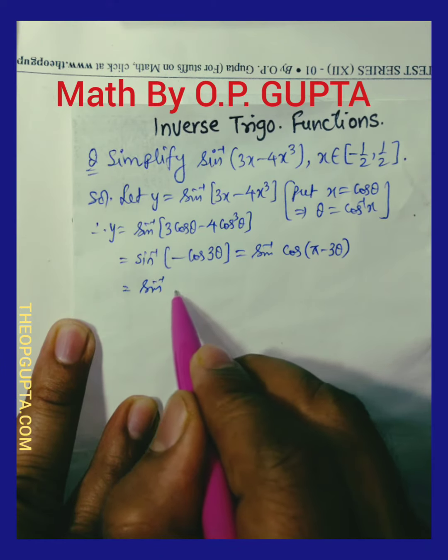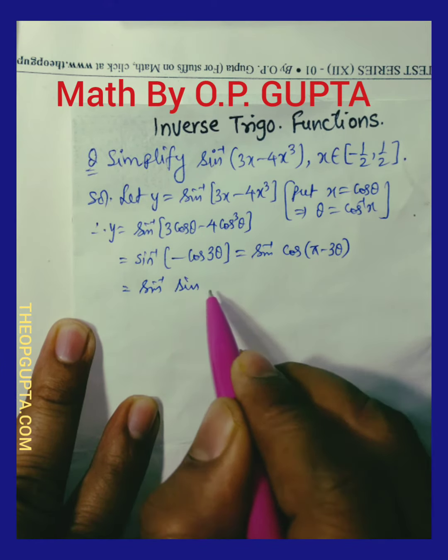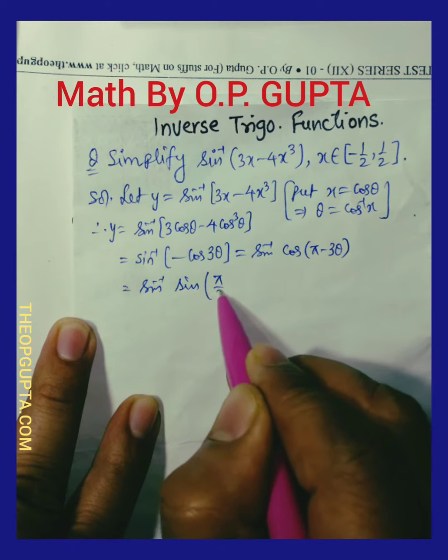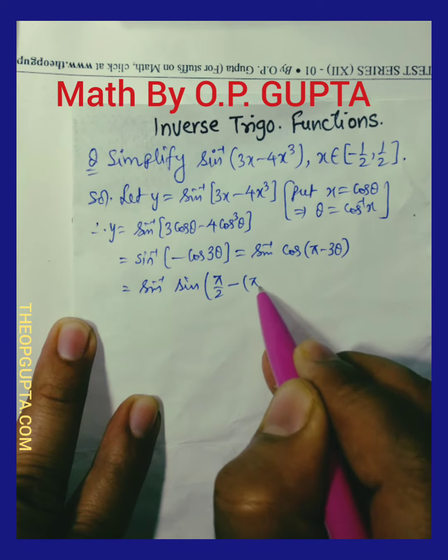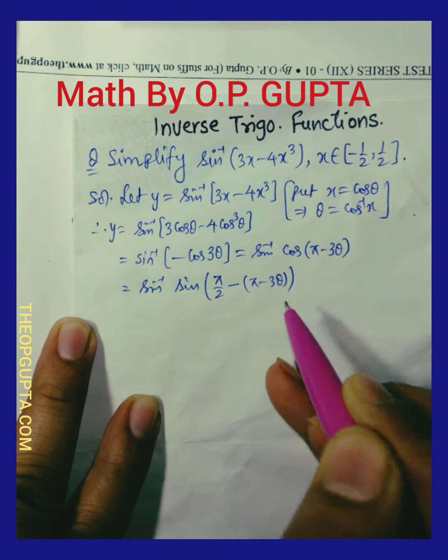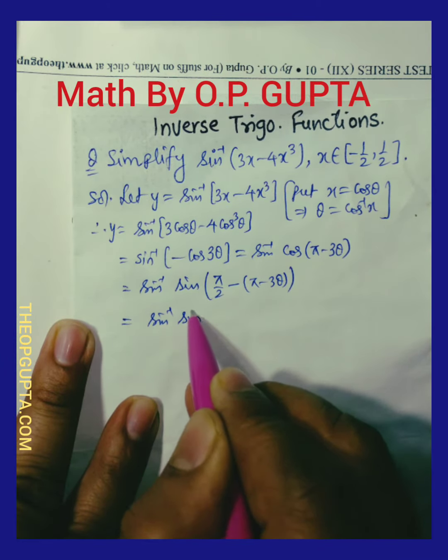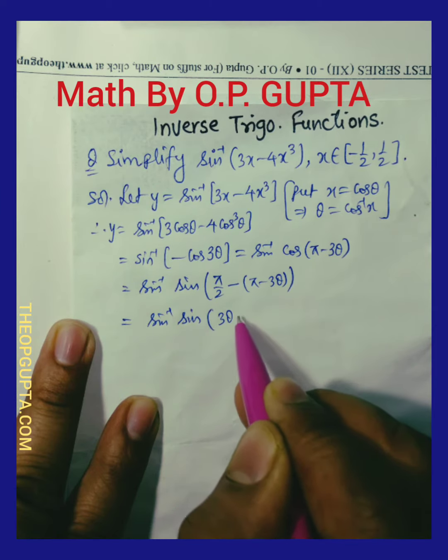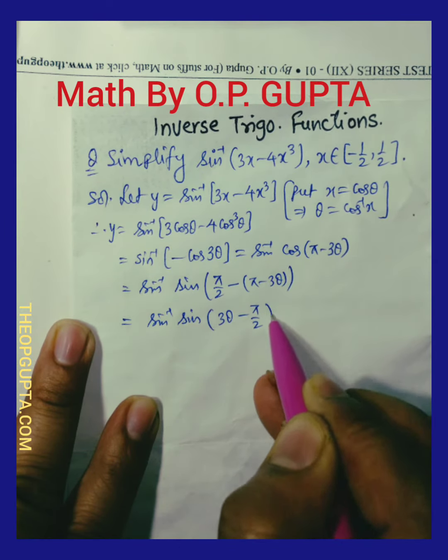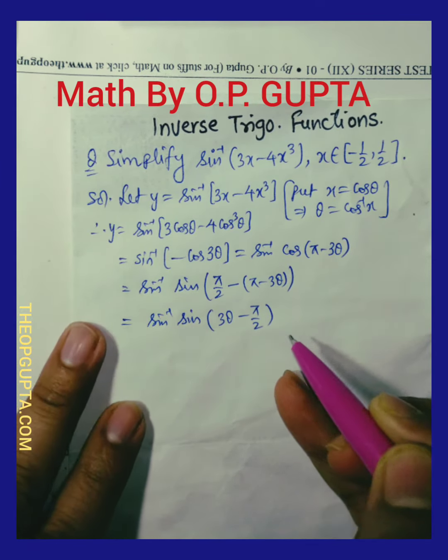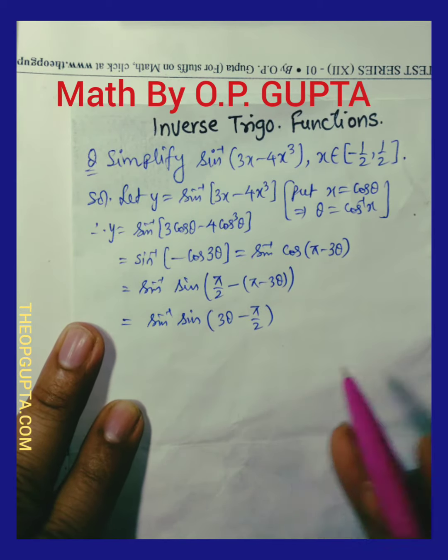Consequently, cos of a is sine pi by 2 minus a. So let me use that formula. We will write it sine pi by 2 minus pi minus 3 theta.